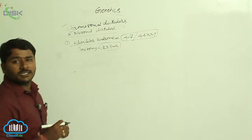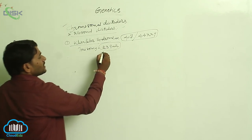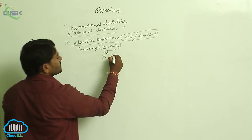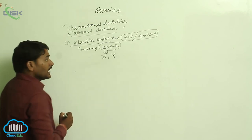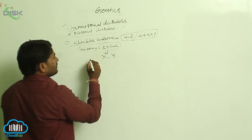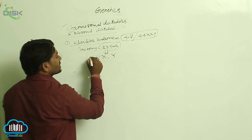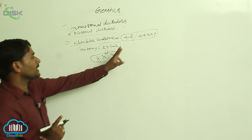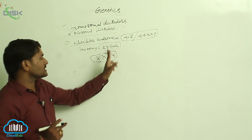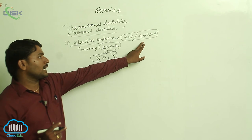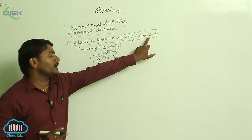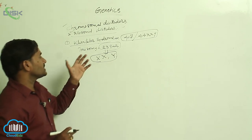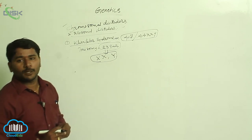In the 23rd pair of males, there is normally one X and one Y chromosome. But in Klinefelter syndrome, there is one extra X chromosome, making the total chromosome count 47. The karyotype is 44 autosomes plus one X, one X, and one Y — this is trisomy of the 23rd pair chromosome.